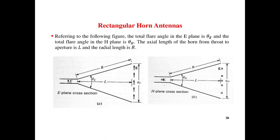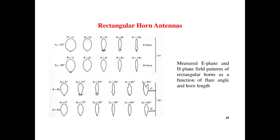Rectangular horn antenna. Refer to the figure, you can see the E-plane cross section and H-plane cross section with theta E and total flare angle. H-plane is theta H. The axial length of the horn from the throat to the aperture is radial length R.